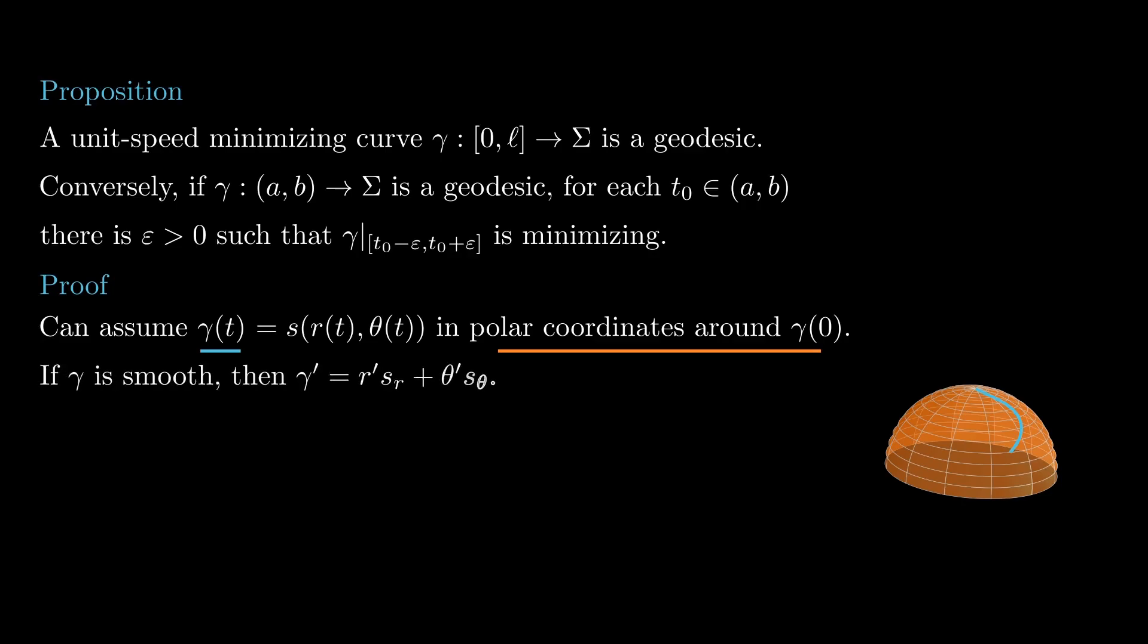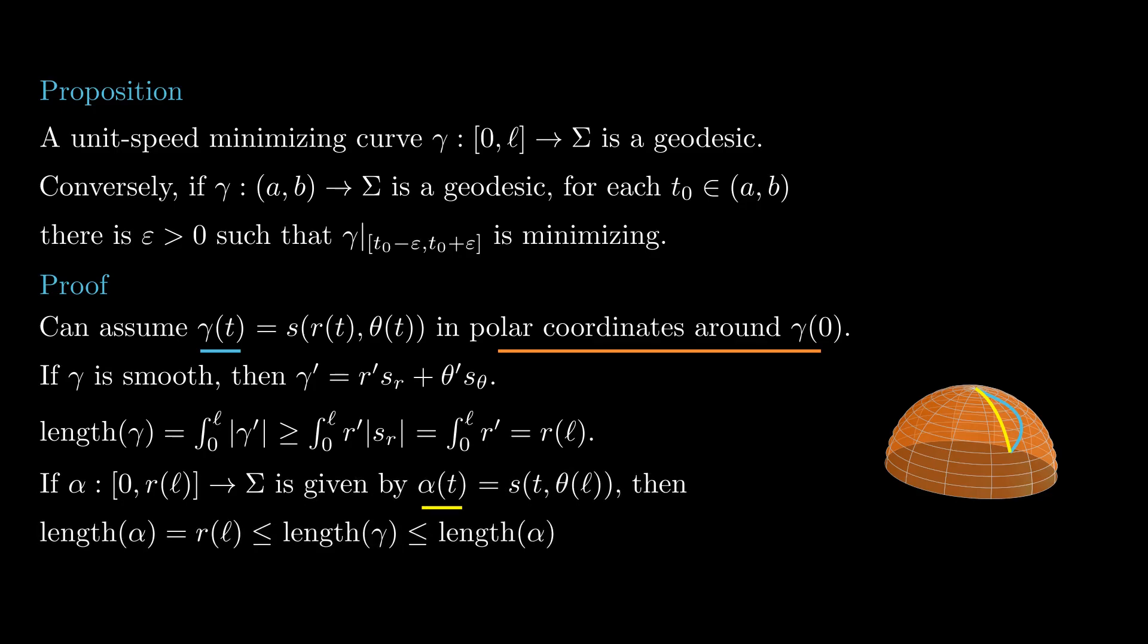Assume for now that gamma is a smooth curve. Then gamma prime is given by R prime as R plus theta prime as theta. Since the length of gamma is given by the integral from 0 to L of the length of gamma prime, by the Gauss Lemma and the Pythagoras theorem, it is greater or equal than the integral of R prime, which equals R of L. Notice also that the curve alpha given by alpha equals S of T, theta of L has length precisely R of L and has the same endpoints as gamma. Since gamma was minimizing, its length is lesser or equal to the one of alpha, so the inequalities in the above expression are actually equalities. This can only happen if theta prime is identically zero and gamma coincides with alpha being a geodesic.